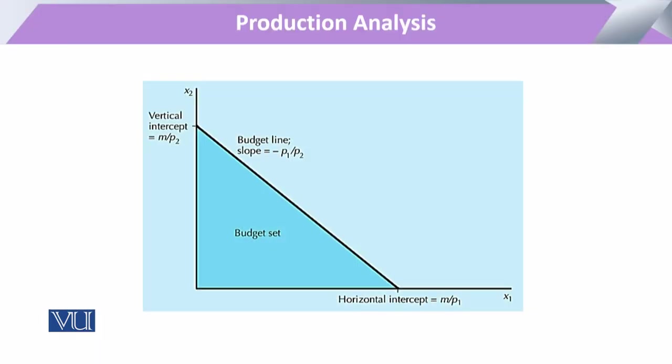This was our original budget line in the form of consumption. If x1 is equal to one input and x2 is equal to the other input, then we can exhibit the same budget line for a producer who is going to produce any amount of output, utilizing the two factors of production x1 and x2.